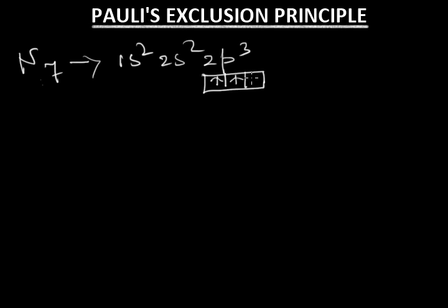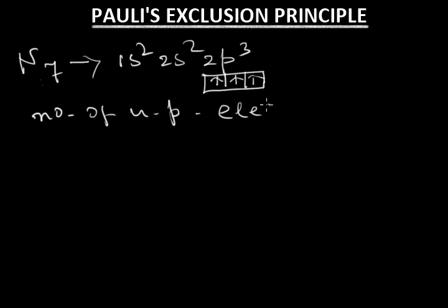There are three electrons in the 2p level. All three orbitals contain one electron each, so the number of unpaired electrons equals 3. If we write all four quantum numbers of these three unpaired electrons, we can clearly understand this principle.